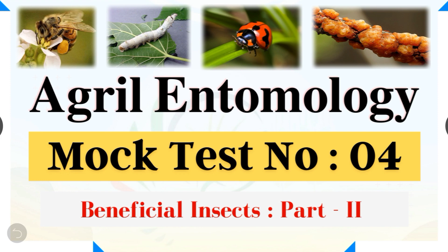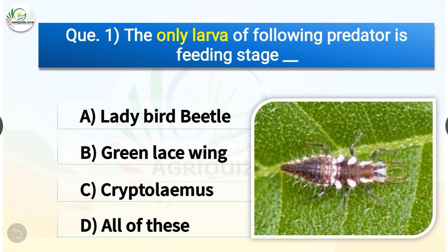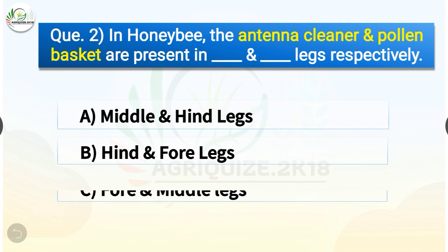Question number one: The only larva of the following predator is the feeding stage. The options are: ladybird beetle, green lacewing, Cryptolaemus, or all of these. The correct answer is option B — green lacewing. So the only larva of the following predators in the feeding stage is green lacewing.